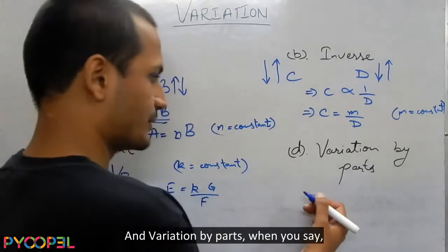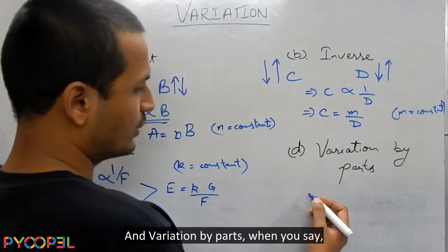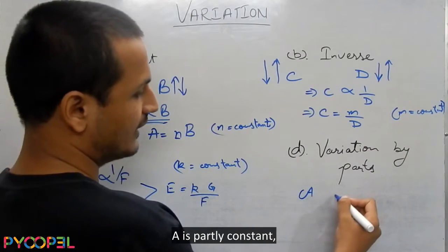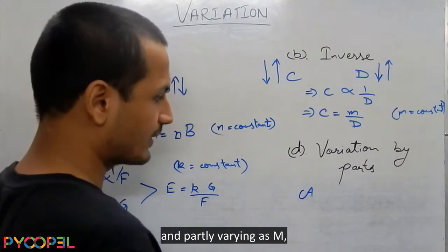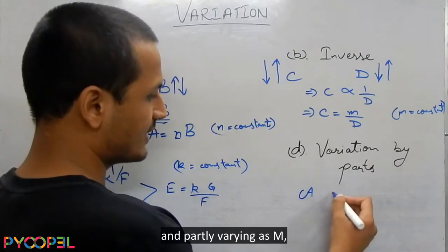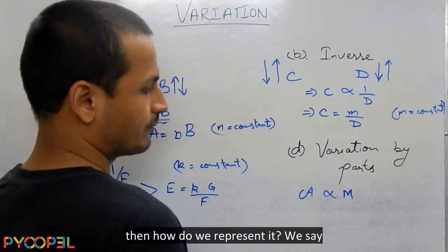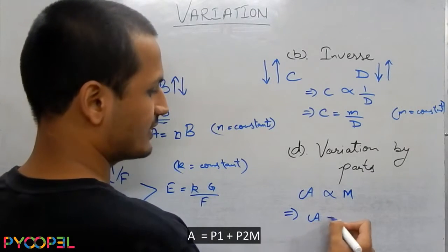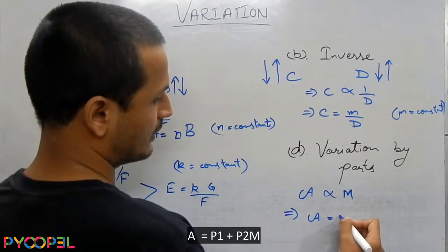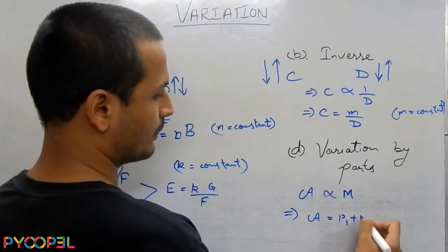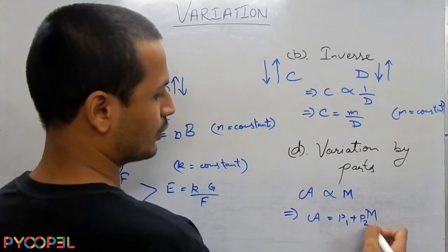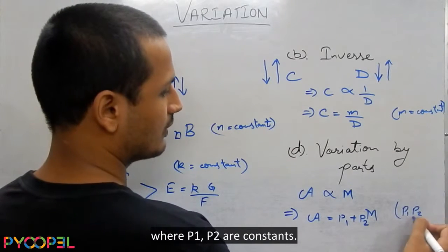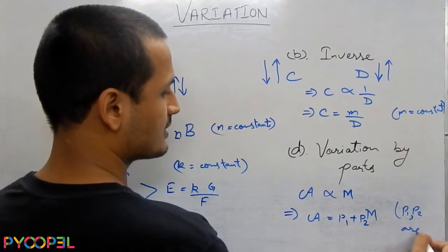And variation by parts. When you say A is varying partly — A is partly constant and partly varying as, let's say, M — we represent it as A = P1 + P2·M, where P1 and P2 are constants.